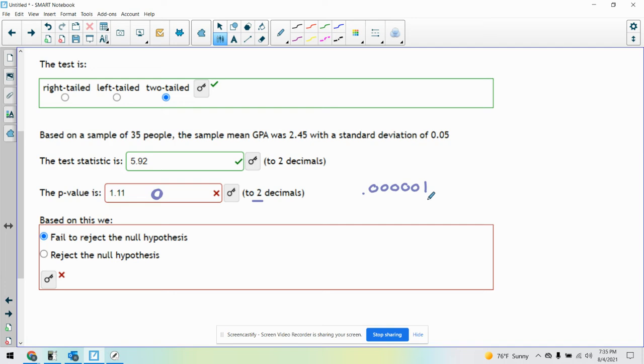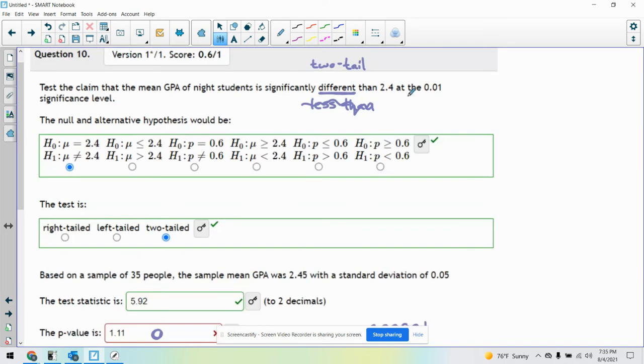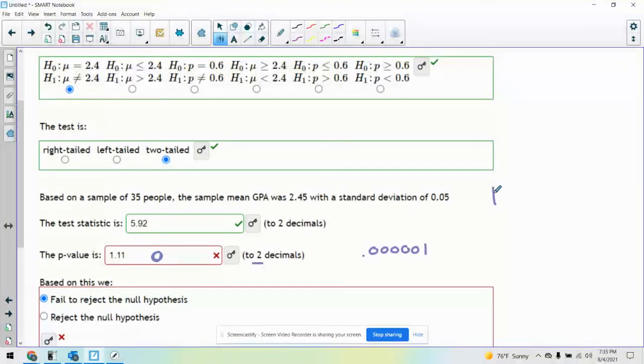Okay. How do we fail to reject or reject? It's looking at your p-value and alpha. Okay, here's my alpha. You're going to compare p to alpha. Keep this in mind: if p is low, we reject H0, the null. If p is low, or in this case lower than alpha, we reject H0.